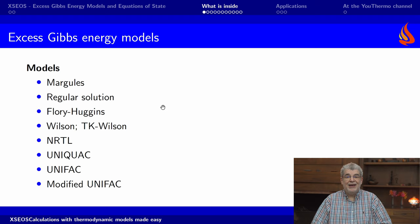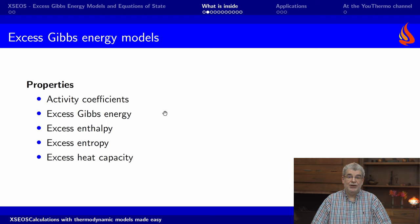It has a number of excess Gibbs Energy models implemented — those most commonly used for chemical process design — such as NRTL, Uniquac, and Unifac. With each of these models, a range of properties can be calculated, such as activity coefficients and excess properties including excess Gibbs Energy, excess entropy, and excess heat capacities.